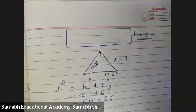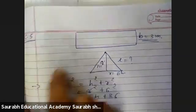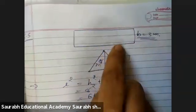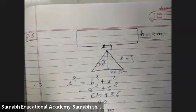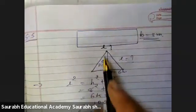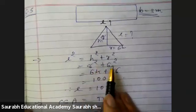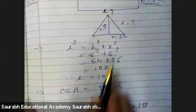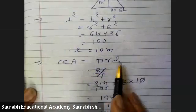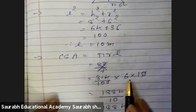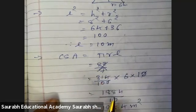Question number 5: What length of tarpaulin 3 meter wide is required to make a conical tent of height 8 meter and base radius 6 meter? First, L squared equals H squared plus R squared: 8 squared plus 6 squared equals 64 plus 36 equals 100, so slant height L equals 10. Curved surface area equals π R L: 3.14 into 6 into 10, which is 314 divided by 100 into 6 into 10. Simplifying gives 314 into 6 divided by 10, that is 188.4 meter square.